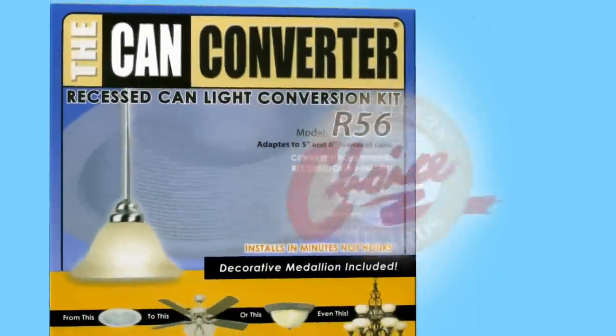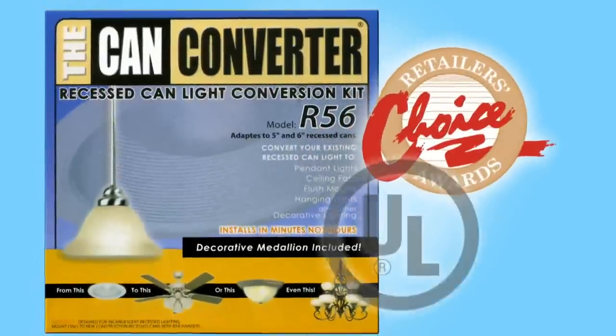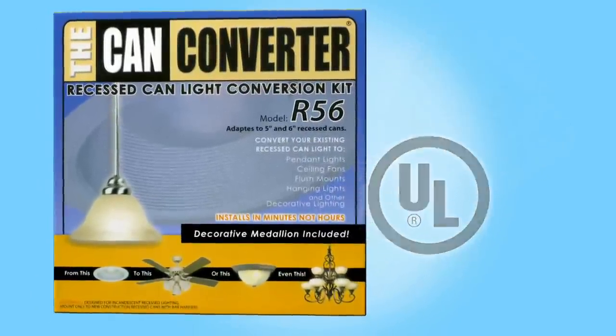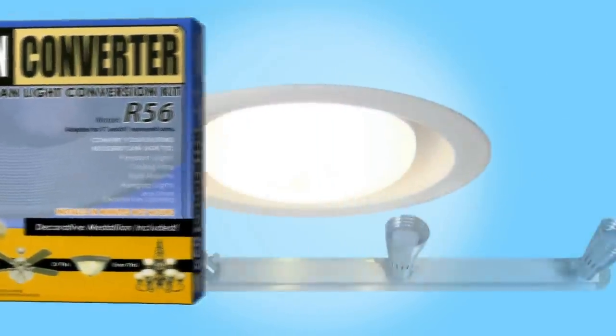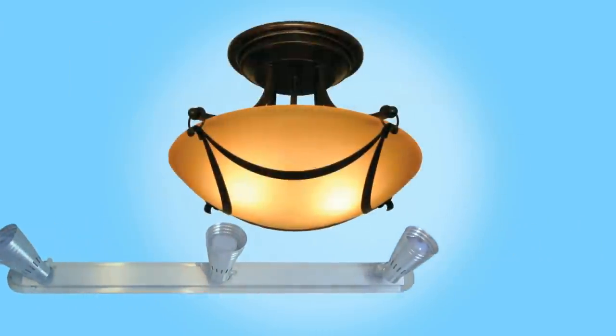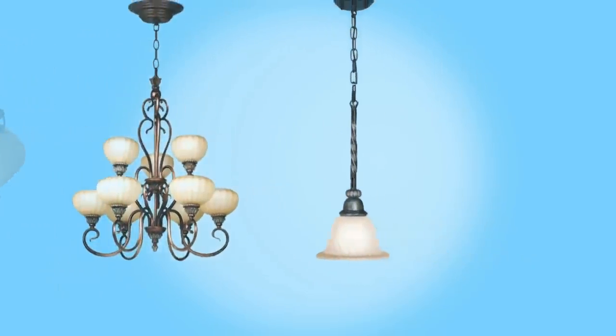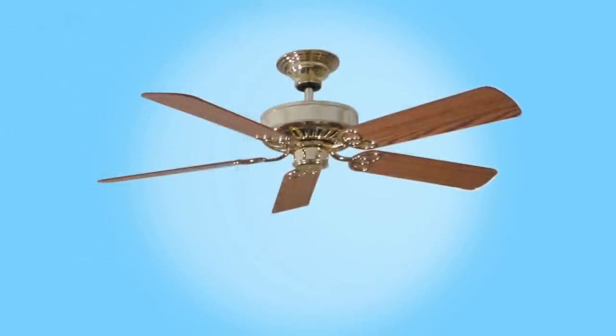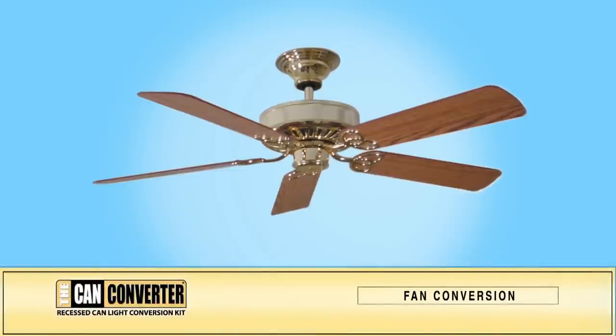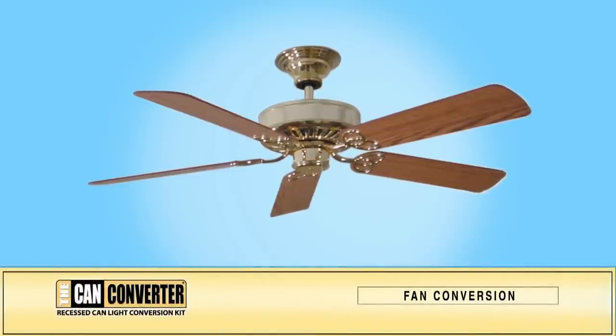The CAN converter is an award-winning UL classified product that allows easy, affordable transformation from an ordinary can light to a variety of lighting design choices. This presentation will provide step-by-step instructions for installing the R56 CAN converter in conjunction with a ceiling fan.